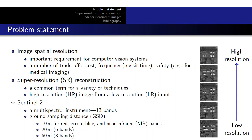Here we focus on Sentinel-2 images, which are acquired using a multispectral instrument that captures 13 bands, whose ground sampling distance ranges from 10 meters up to 60 meters GSD.